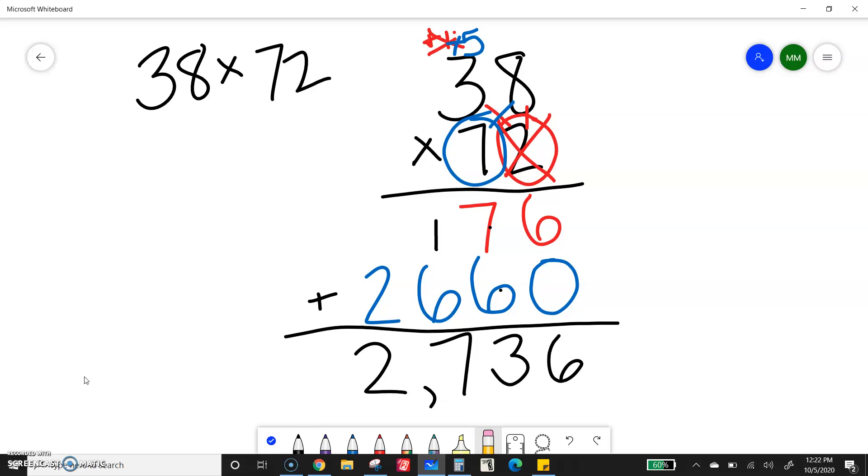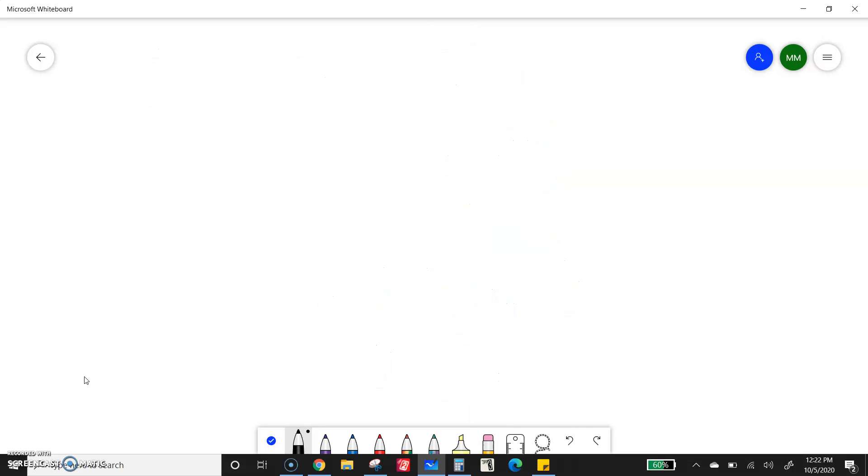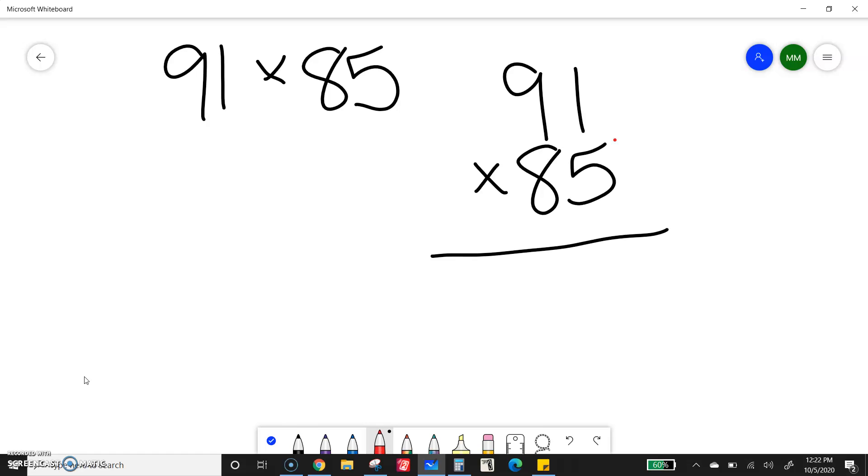I'm going to do another example because it's just tricky. 91 times 85. Write it on top of each other. What place do I start with? The ones. 1 times 5 is 5. 5 times 9 is 45. Because I have nowhere to carry it, I can just write it down there.